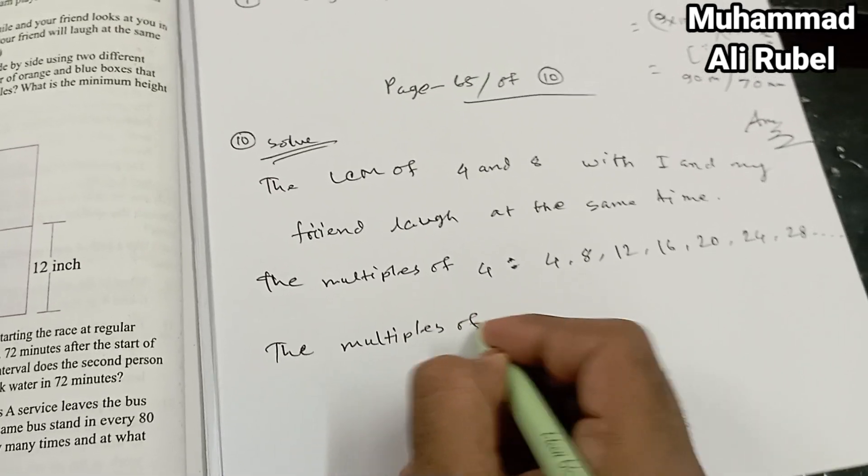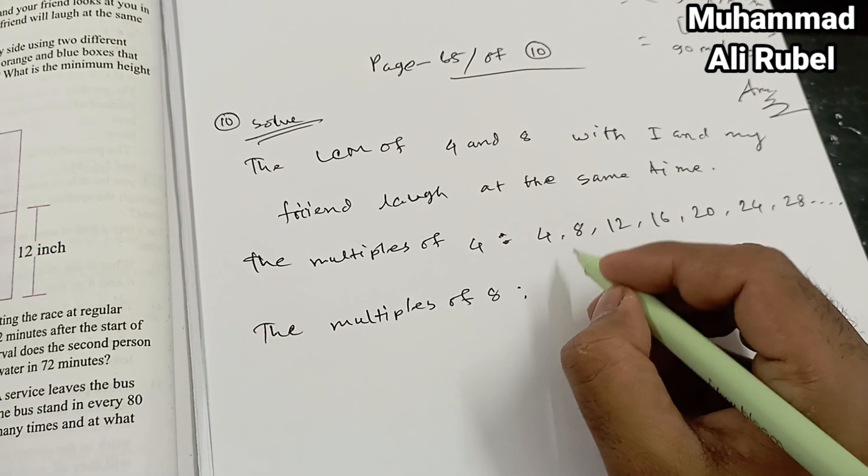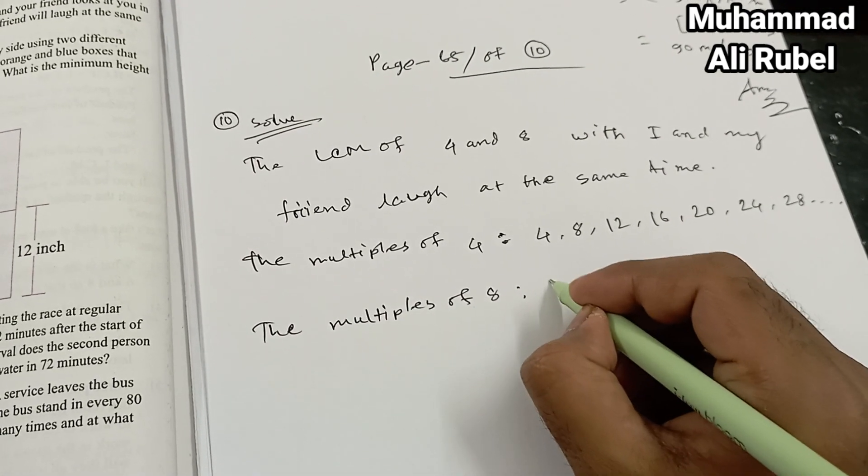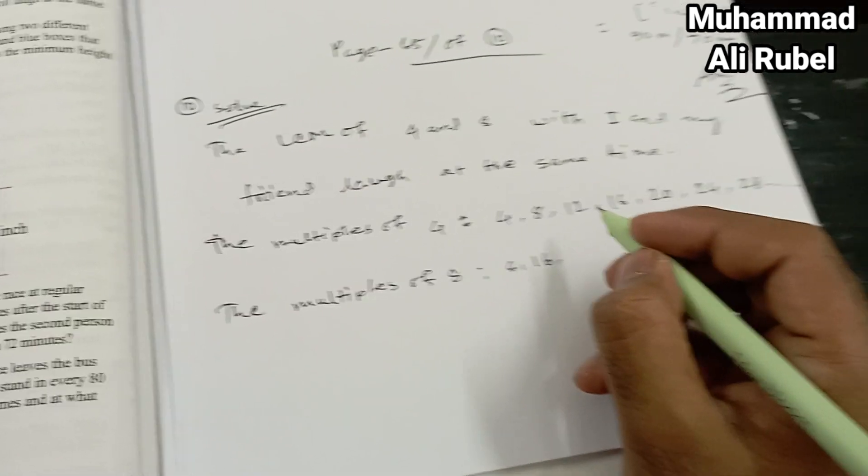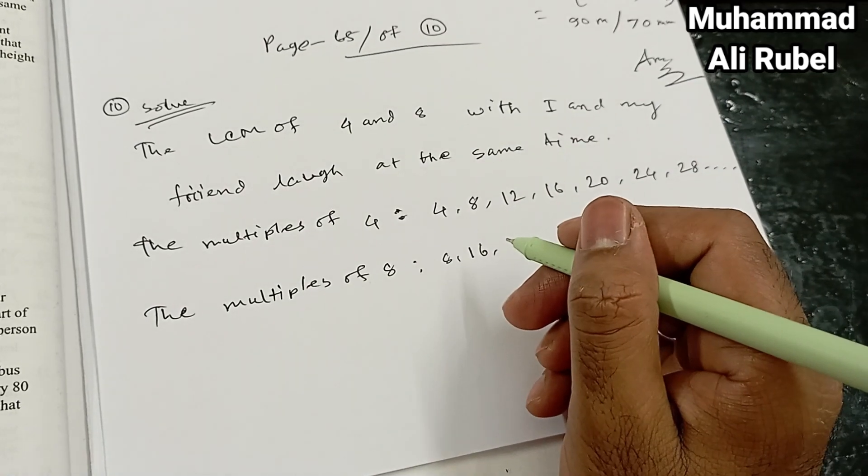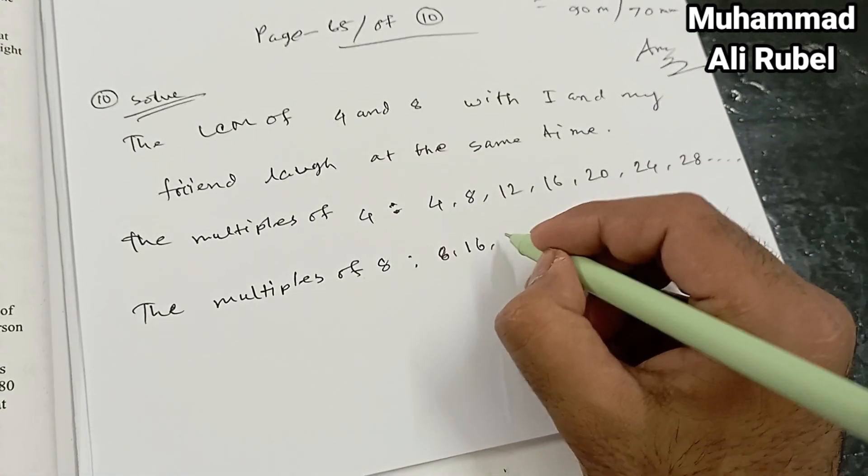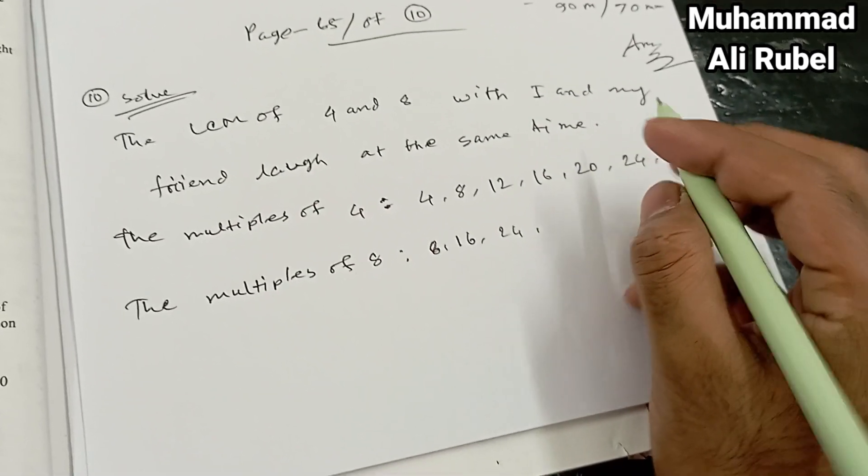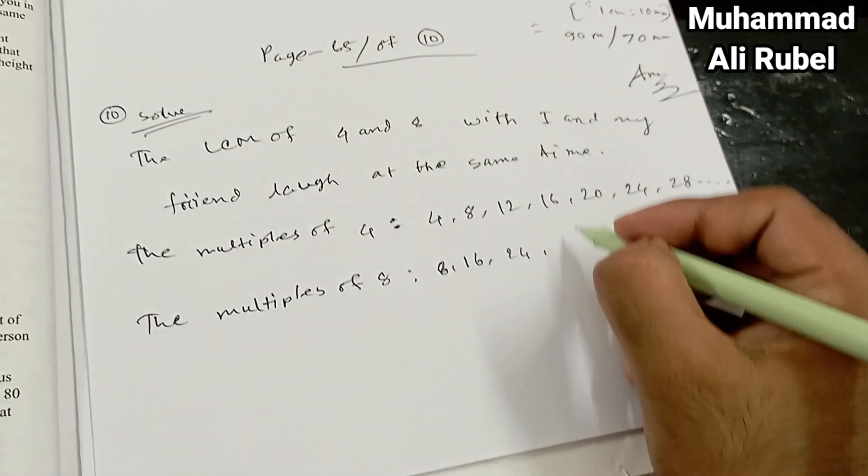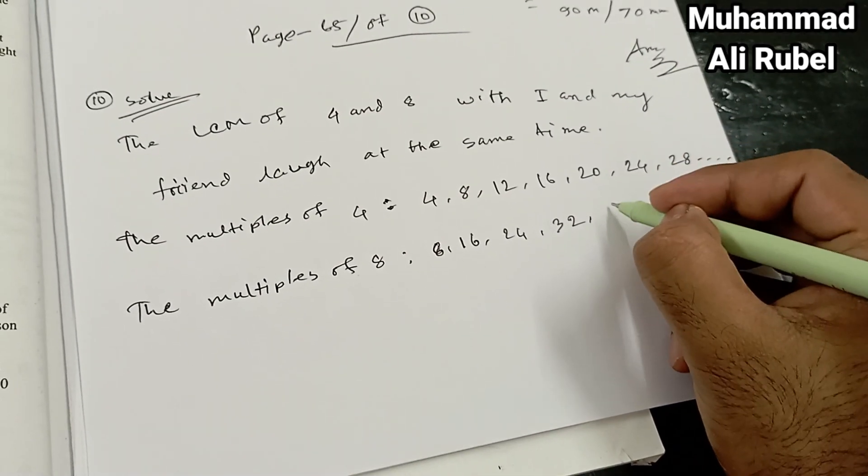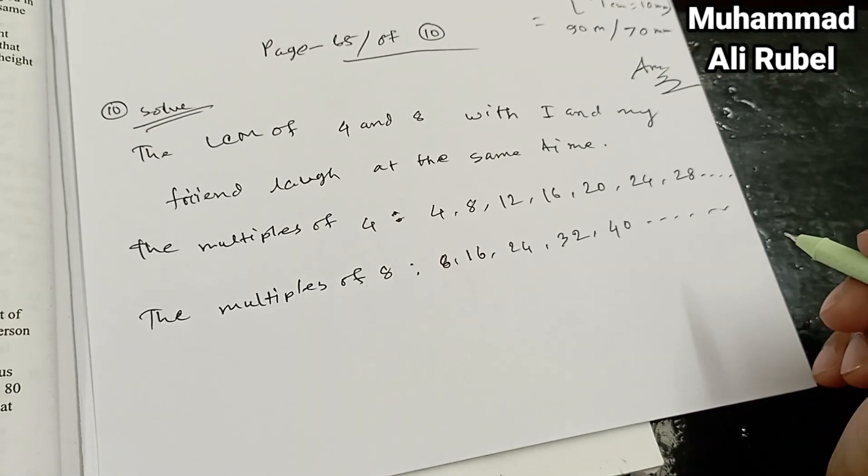Multiples of eight: eight, sixteen, sixteen, twenty-four, thirty-two, forty, forty, infinity.